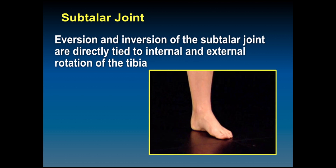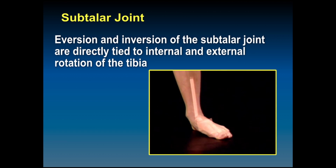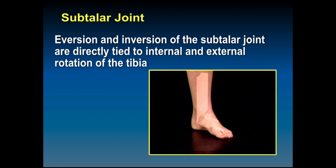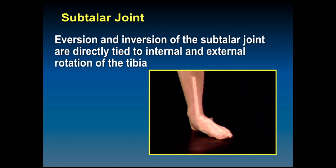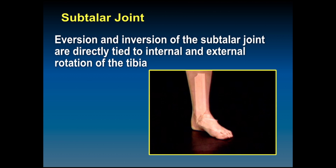When we walk, it's like a controlled fall. As you look here with the overlay of the model, internal rotation of the tibia results in eversion of the talus. External rotation of the tibia results in inversion of the talus. These are opposite motions and must be normal to have normal gait.